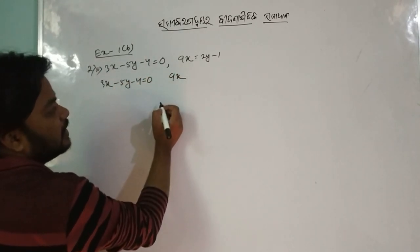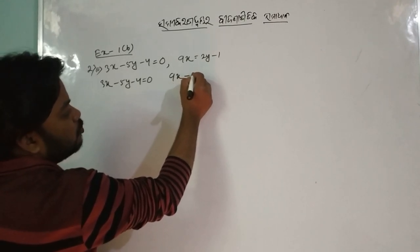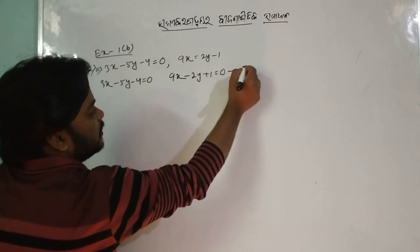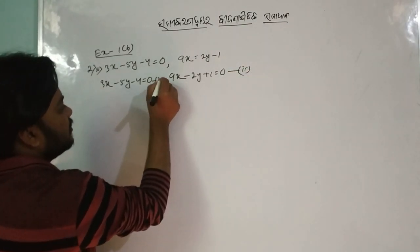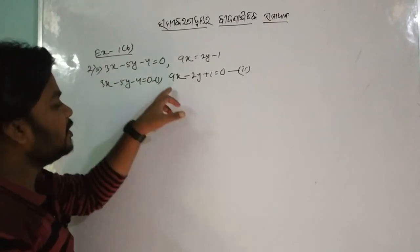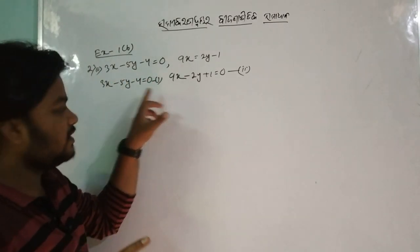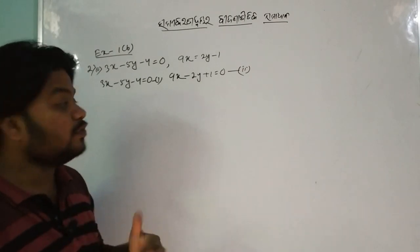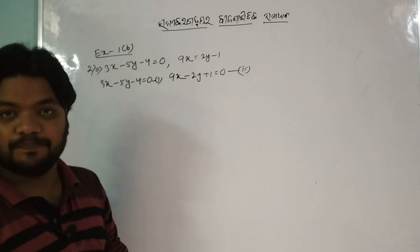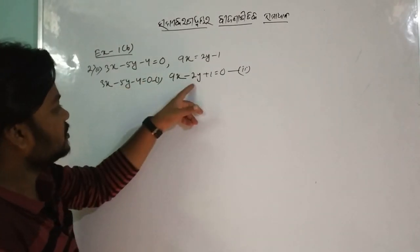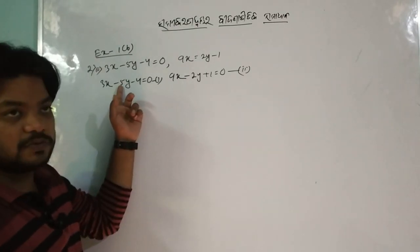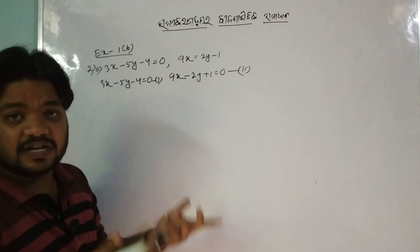The second equation is 9x minus 2y plus 1 is equal to 0. Next we have 3x minus 9x. 3x versus 9x: 3x minus 9x. We are doing 2x minus 3x minus 4x minus 5x. Now we have to solve this problem. 5x minus 8x minus 5x minus 10x — we have to solve this problem.